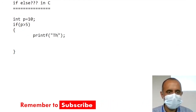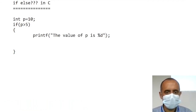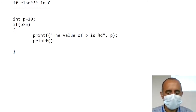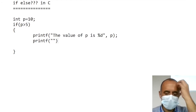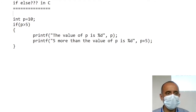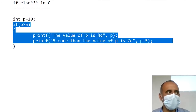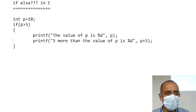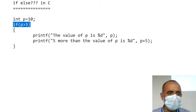You can see this — you can run it. What happens is that when you run this block, this block will definitely run. These two lines will run because the condition is true.